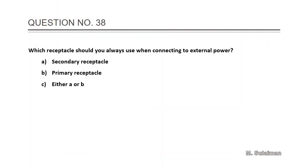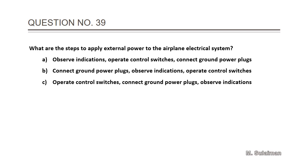Question number 38: Which receptacle should you always use when connecting to the external power? Answer is B: primary receptacle. Question number 39: What are the steps to apply external power to the airplane's electrical system? Answer is B: connect ground power plugs, observe indications, control switches.